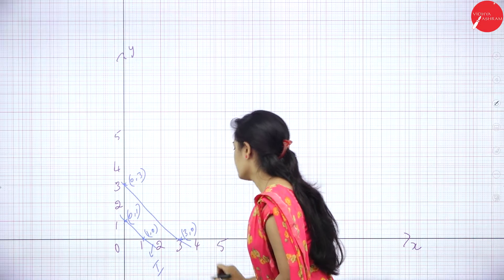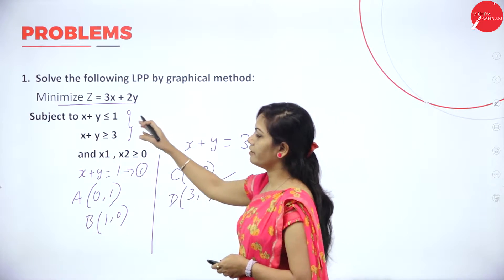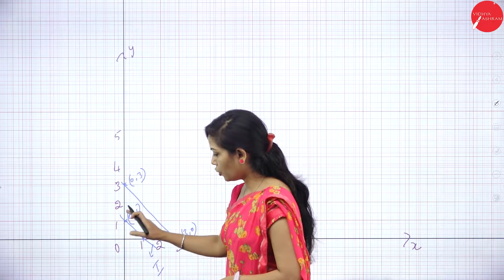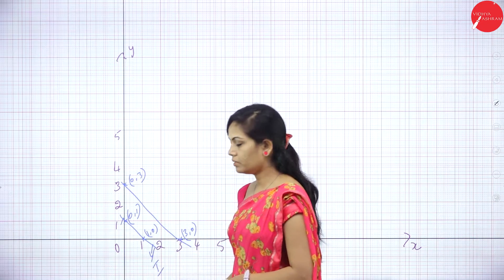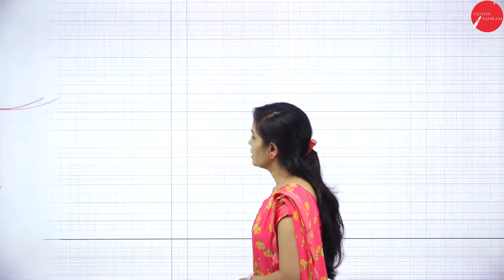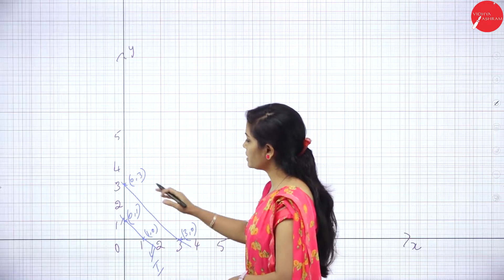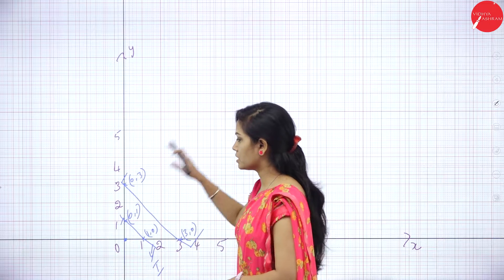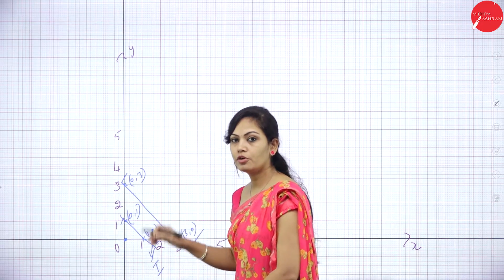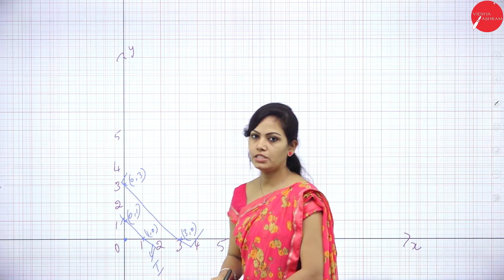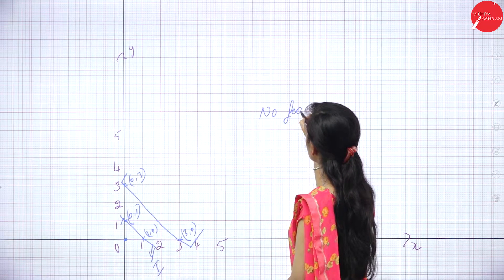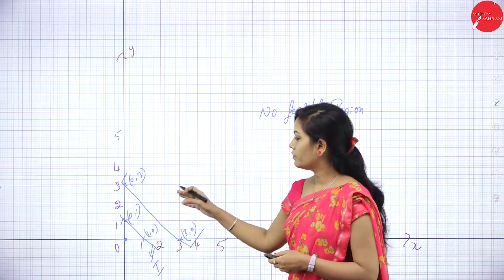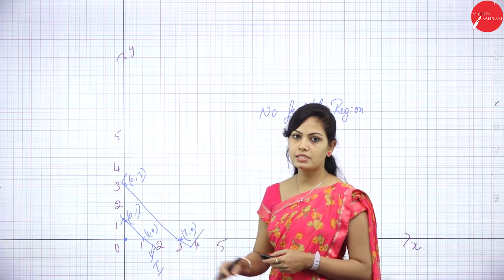Now observe this. We have two different constraints. The first constraint is less than or equal to 1, which means below the region — that means towards the origin. The second constraint is greater than or equal to 3, which means above the region — opposite to the origin. Here there is no common region generated for these constraints, so there is no feasible region and no feasible solution.